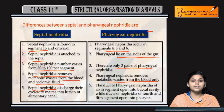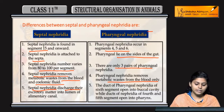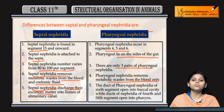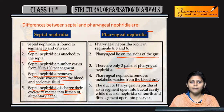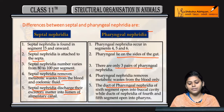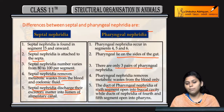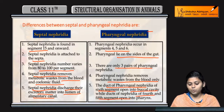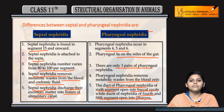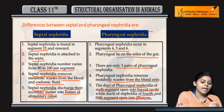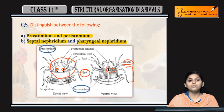Septal nephridia discharge excretory matter into the lumen of the alimentary canal, whereas the duct of pharyngeal nephridia of the 6th segment opens into the buccal cavity, and those of the 4th and 5th segments open into the pharynx. This concludes the distinctions between septal and pharyngeal nephridia, and between peristomium and prostomium.